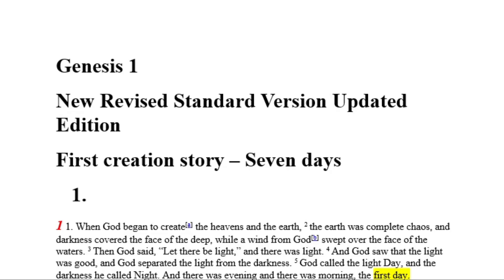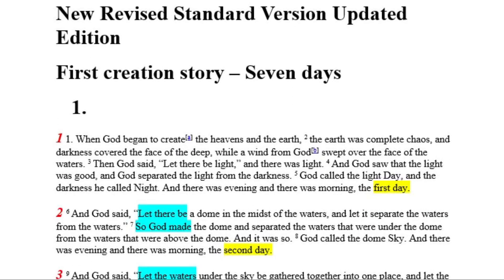What I'm using here for this is an RSV updated edition. It's just easier to read. I don't use this for my number searching, but for reading this is going to be a little bit easier to understand. Now what I want to do is talk about the two styles, and the way that this kind of jumps out at me is like with coding — software coding.